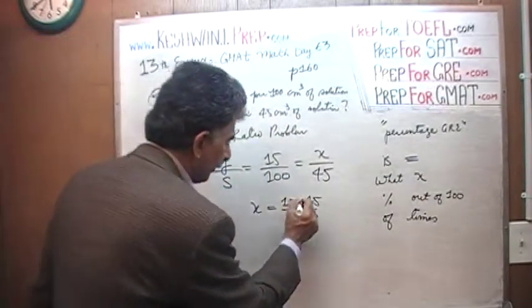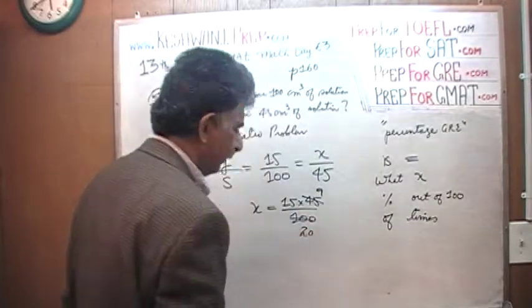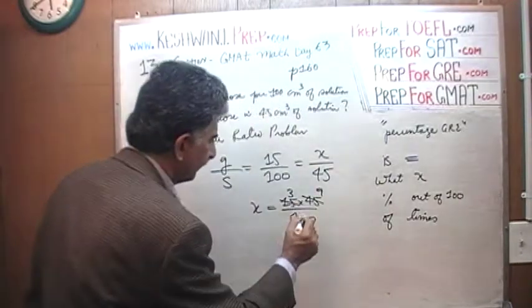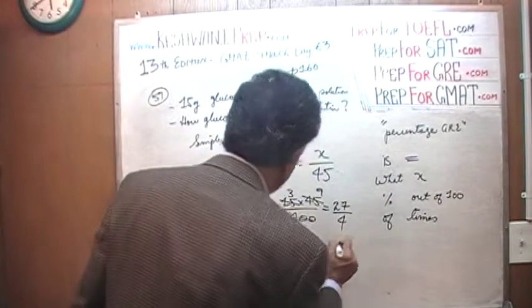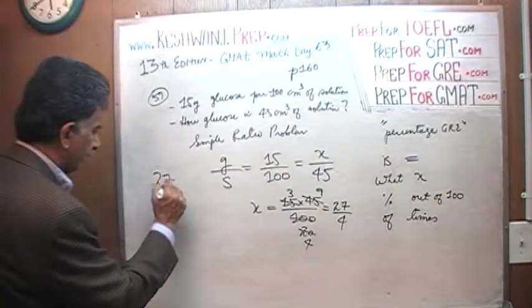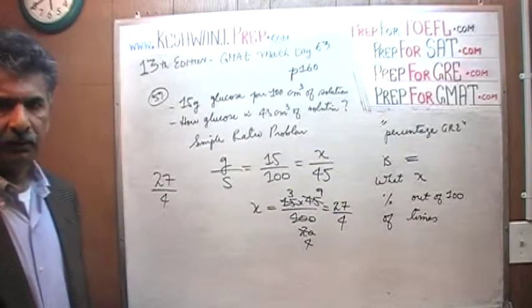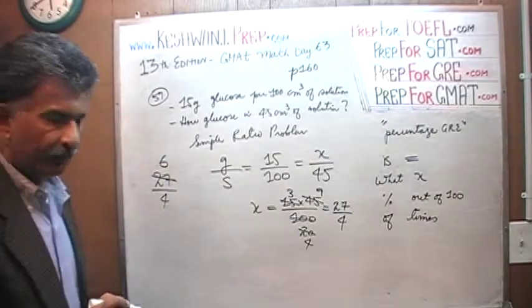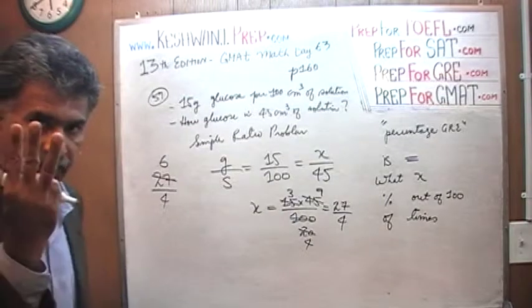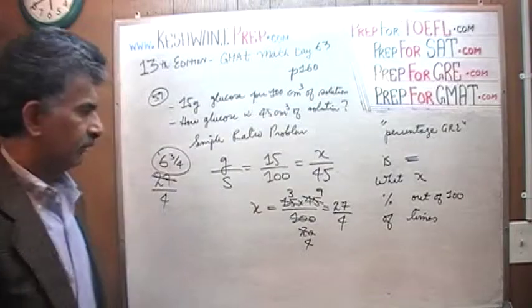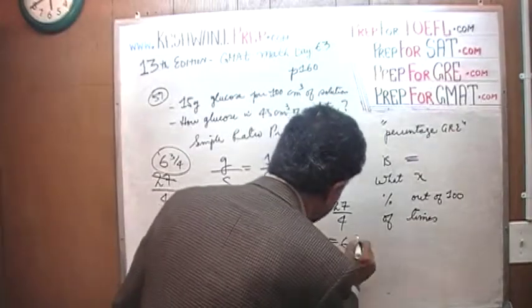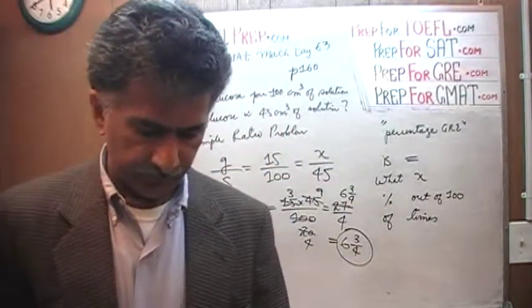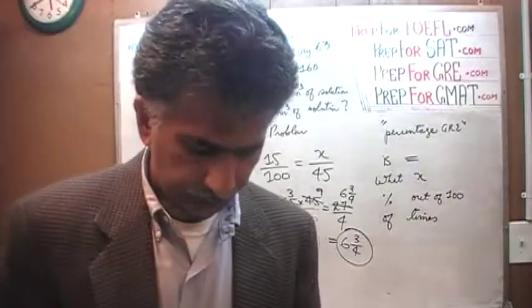So x equals 15 times 45 over 100. Divide top and bottom by 5: 45 becomes 9, 100 becomes 20. Let's have one more go, divide top and bottom by 5: 15 becomes 3, and 20 becomes 4. 3 times 9 is 27 divided by 4. We have 27 divided by 4. How many 4s in 27? 27 has 6 fours. 6 fours are 24, but we don't have 24, we have 27, which means we have 3 remainder. There we go. Voilà. 6 and 3 quarters. The result is 6 and 3 quarters. That's about it.